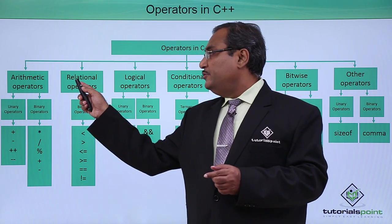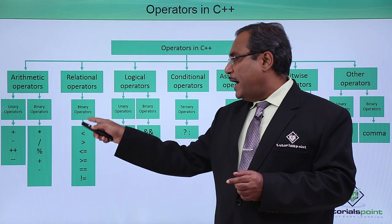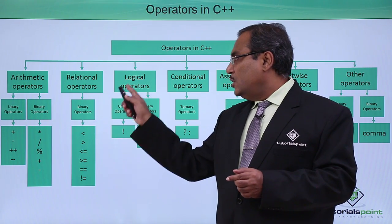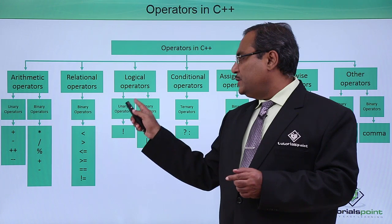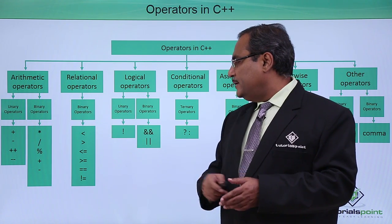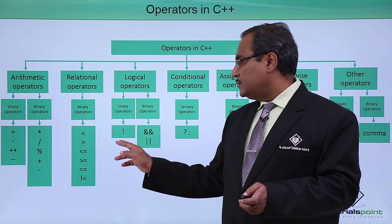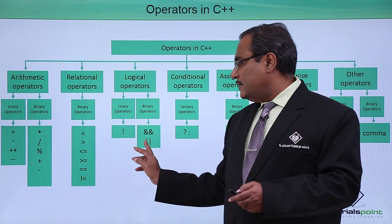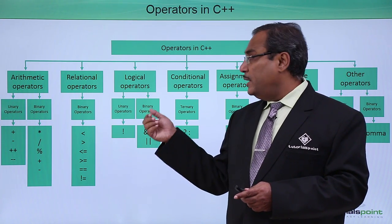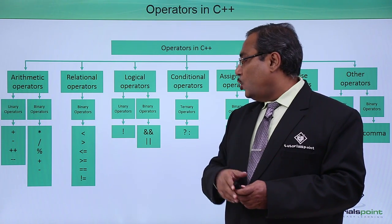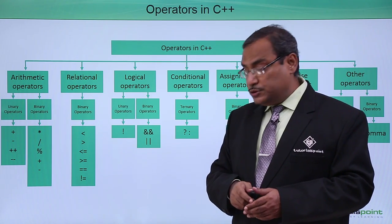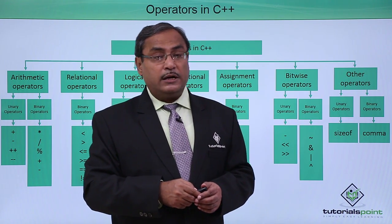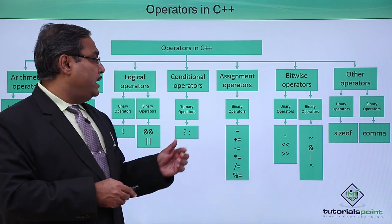Next one is our relational operators — we have binary operators there. Then we have logical operators: unary logical operators and binary logical operators. The unary one is NOT, and the binary ones are AND and OR. We also have conditional operators, where you can use the ternary operator, which is the question mark and colon.